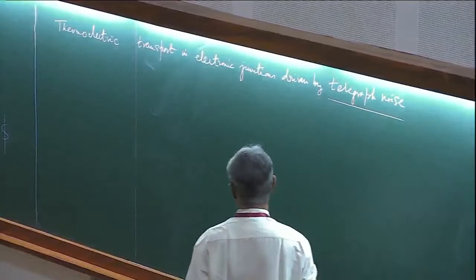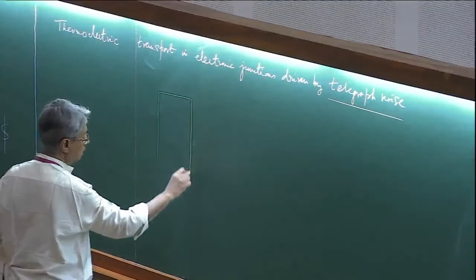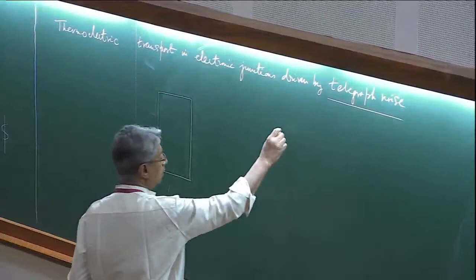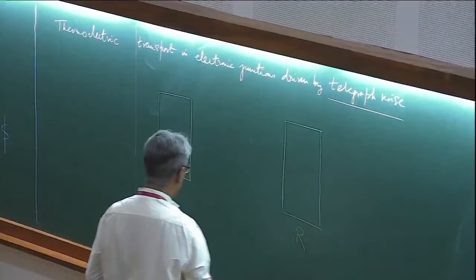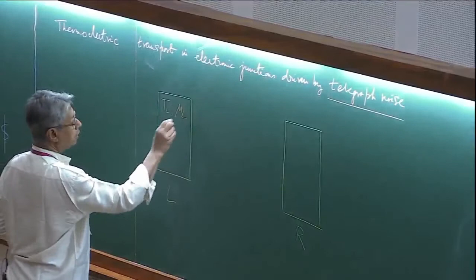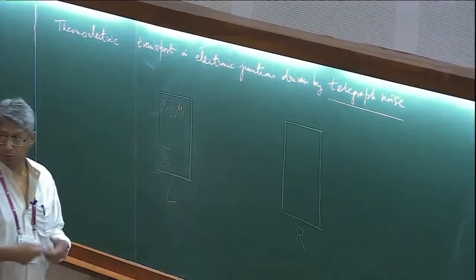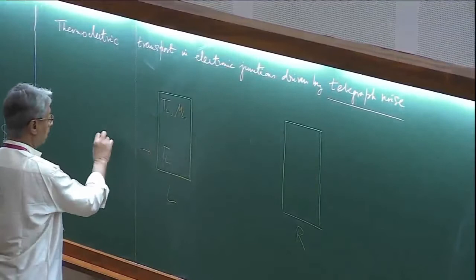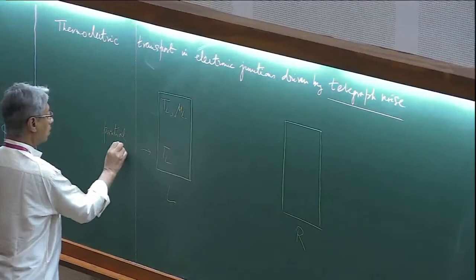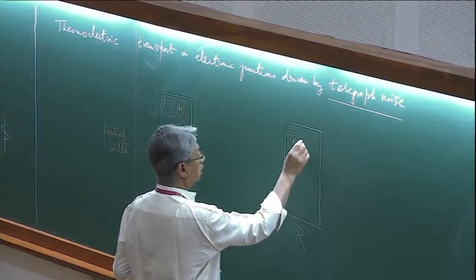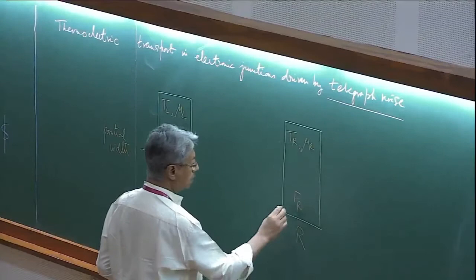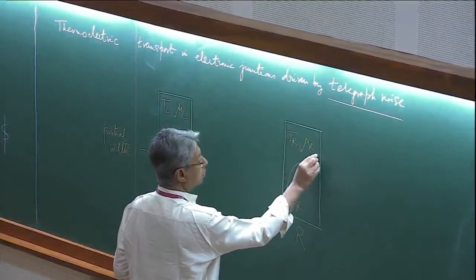Suppose you think of two leads, these are like two fermionic baths. This lead is the left lead and you have the right lead. You define this left lead in terms of its temperature and a chemical potential, and also what you call a partial width, which you calculate from the self-energy. Similarly, the right lead also has a temperature and a chemical potential and a partial width. You have your Fermi distribution function going like that.